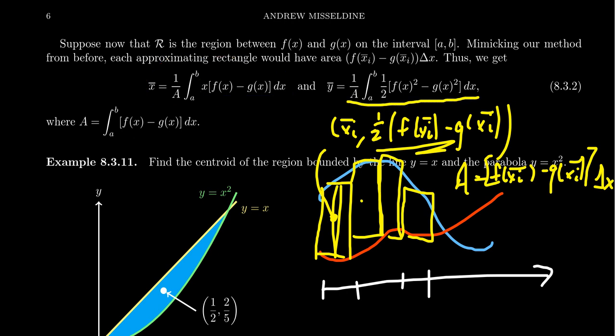For y-bar, things look a little bit different. You get one over a, you're going to get one half F of x squared minus G of x squared. Where did that thing come from? Well, the idea is F of x squared minus G of x squared factors as F of x minus G of x times F of x plus G of x, like so.